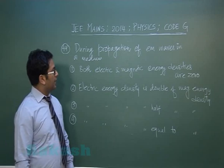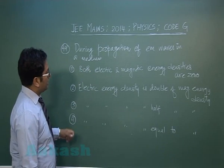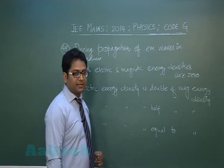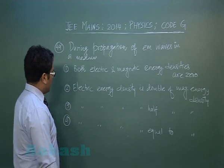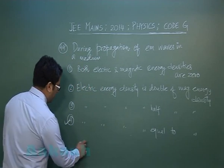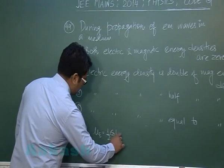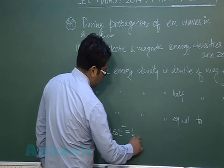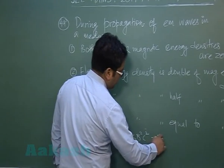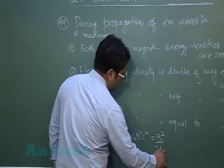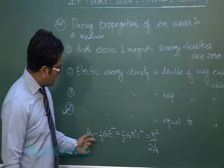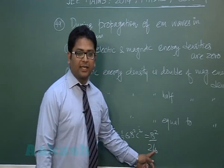Question number 49 is from electromagnetic waves — a theoretical question on energy density. We need to comment on the relative magnitude of electric and magnetic energy density. It is a well-known fact that electric energy density equals magnetic energy density. The proof: electric energy density is ½ε₀E², and using E = Bc and c = 1/√(μ₀ε₀), this reduces to B²/2μ₀, which equals the magnetic energy density.